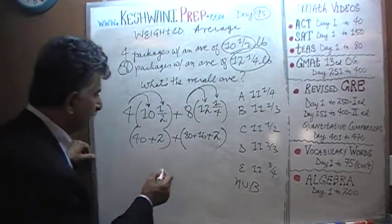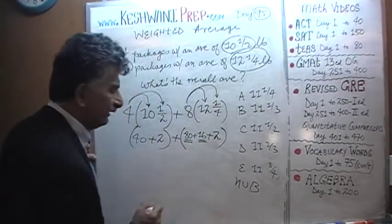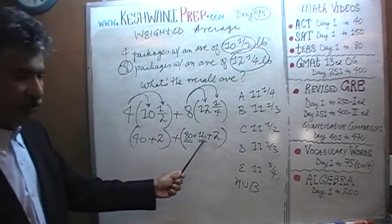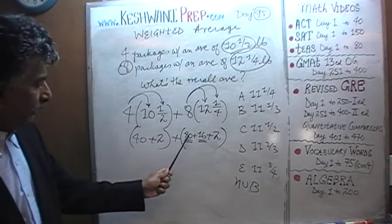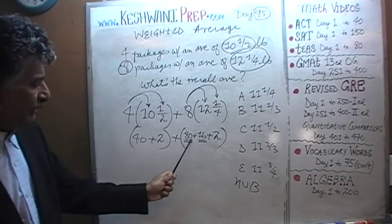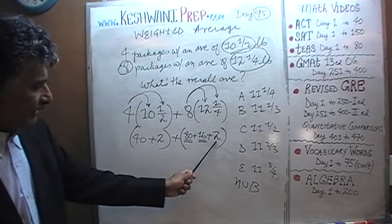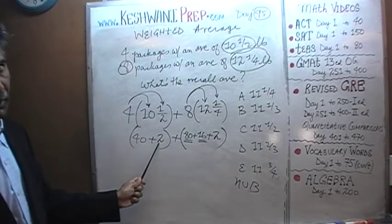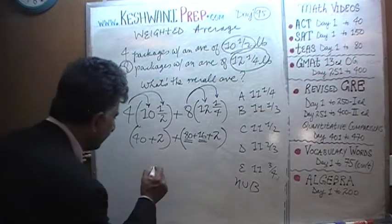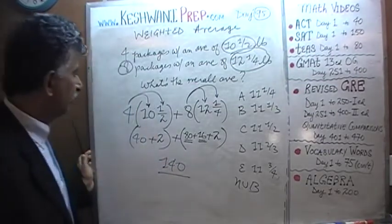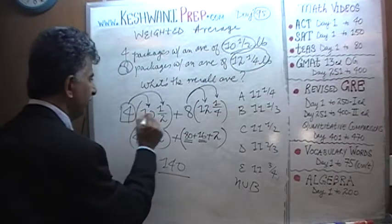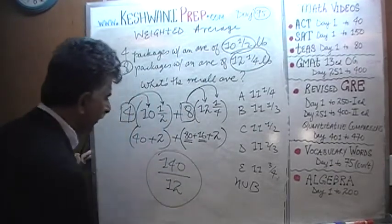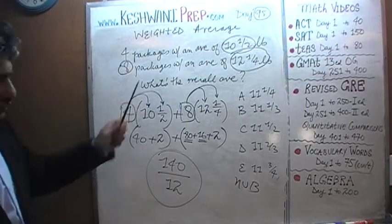That's it. We just have to add them up. Let me get the pointer so I can point to things as I'm speaking. 80 plus 16 is 96. Stay with me in this story. 96 plus 2 is 98. 98 plus 2 is going to be 100. Plus 40 is 140. 140 divided by the total number of packages. We have four packages here, eight packages here. We need to divide that by 12.